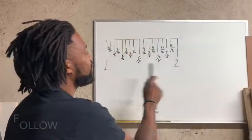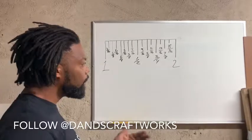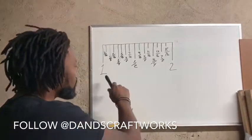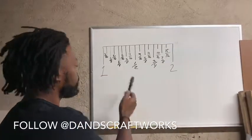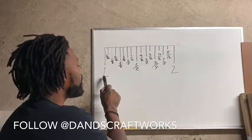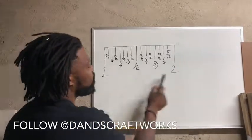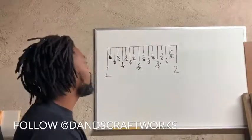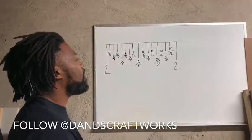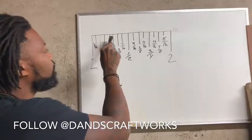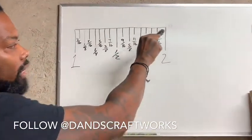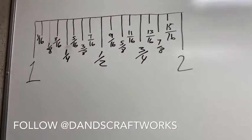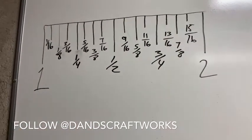I'm taking the liberty to actually write out how you will see it on the measuring tape, starting from one inch to two inches, just to make it easier. Now between each inch, you're going to have what they call ticker marks, which are all of these lines here. And you always have 16 ticker marks between an inch.